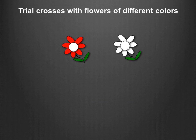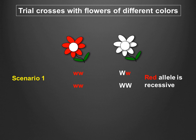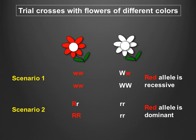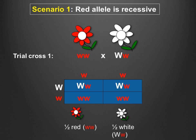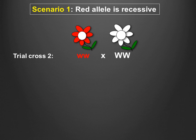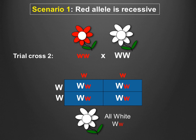Now we move on to the second type of trial cross — one in which the parents are of two different phenotypes. Regardless of the scenario being tested, one of the parents must be homozygous recessive, while the other could be homozygous dominant or heterozygous. Testing the scenario that the red allele is recessive: a cross of a heterozygous plant with a homozygous recessive plant produces half red-flowered and half white-flowered offspring. A cross of a homozygous dominant plant with a homozygous recessive plant produces all white-flowered offspring. Now pause the video and draw out the Punnett squares for these crosses under the assumption that the red allele is dominant.